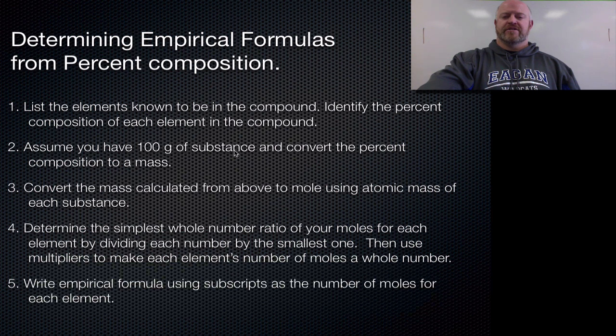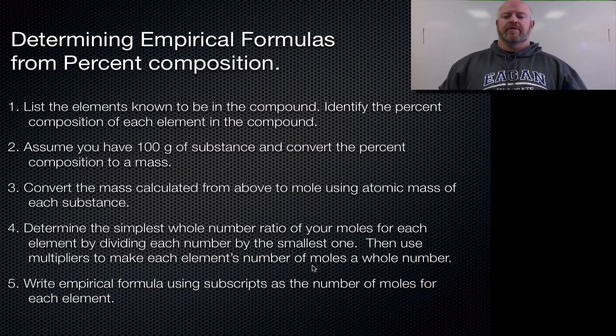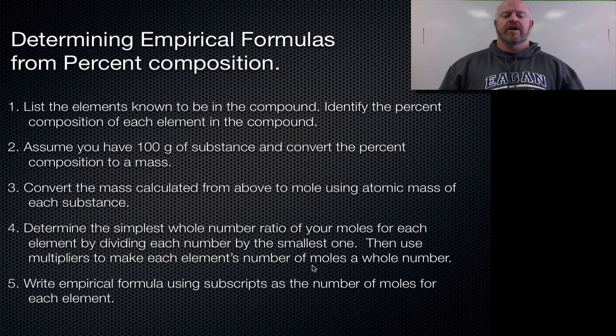Assume you have 100 grams of the substance. Convert that to a percentage. Convert the mass calculated from above to moles using atomic mass of each substance. Determine your smallest whole number ratio by dividing. Then use multipliers to make each element's number of moles a whole number. And then finally write your empirical formula. Now that doesn't make a lot of sense unless we actually go through a practice problem and solve it that way. So we're going to go to the board now and work through a process of doing empirical formulas.